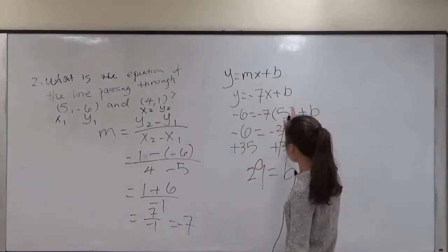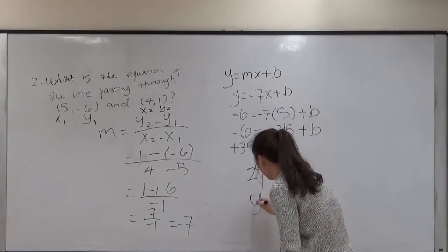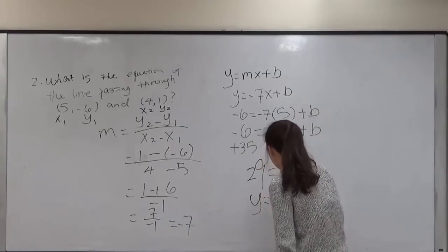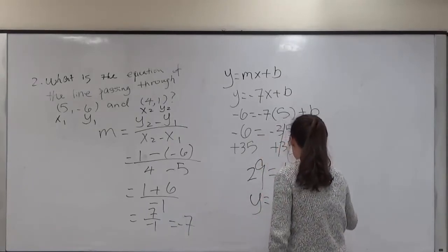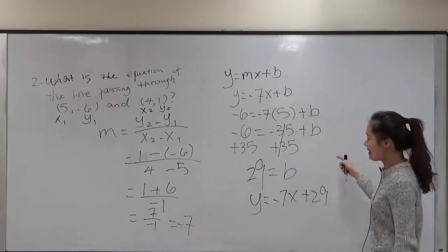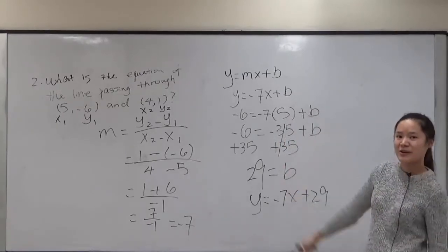So now we know m and b. We can write that into the equation y equals negative 7x plus 29. This is the equation of the line passing through the points.